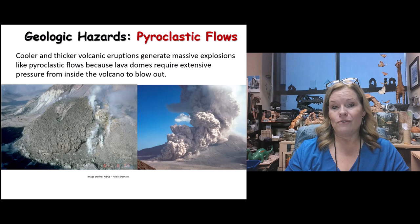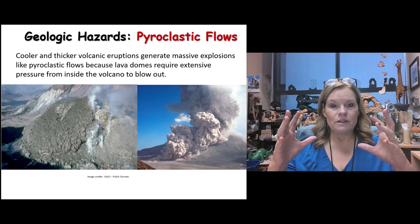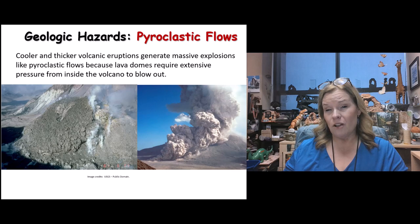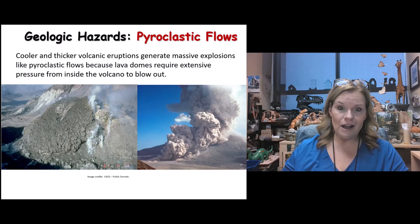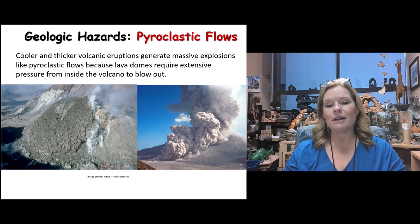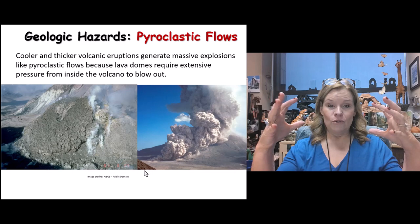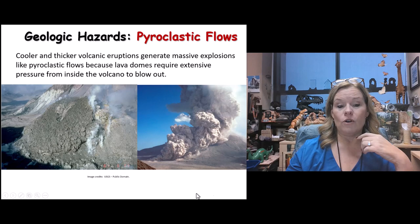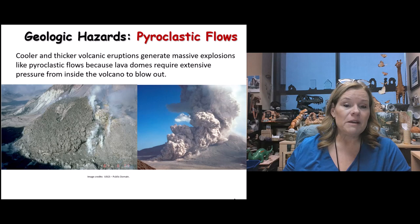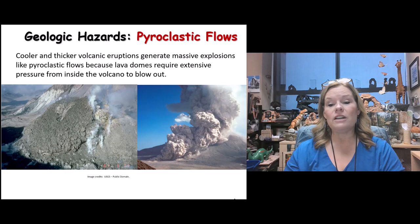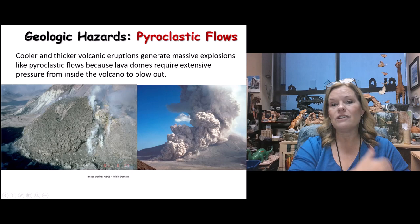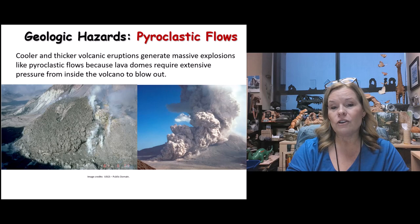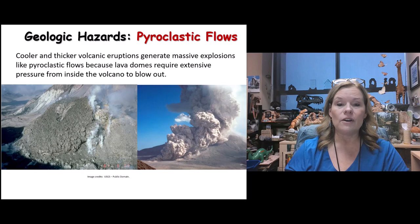Pyroclastic flows occur during active eruptions — a primary hazard. Higher-silica, cooler, thicker lava eruptions stretch the volcano out as thick magma and gases cause it to swell. Lava domes can become so thick they eventually rupture — triggered by an earthquake or landslide, or finally just busting open. When they do, they produce massive pyroclastic clouds moving at such a fast speed that they can reach a community within a minute or two. Absolutely devastating.